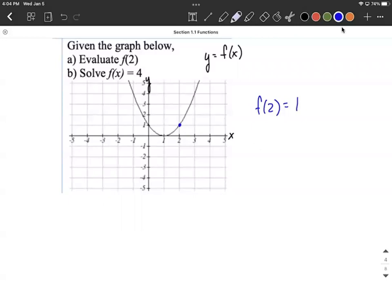Now in part b, it's a little bit different. We have f of x equals four. Since y is the same thing as f of x, that means a y value of four.